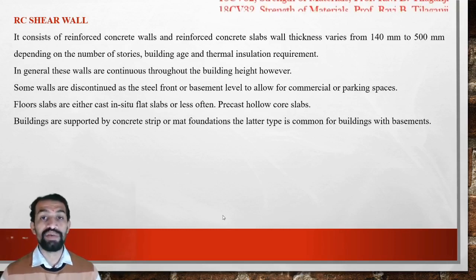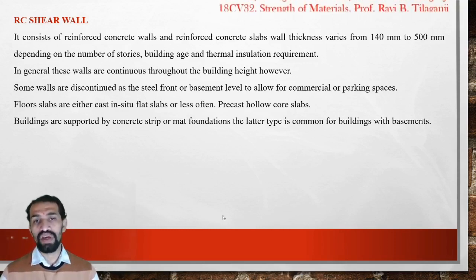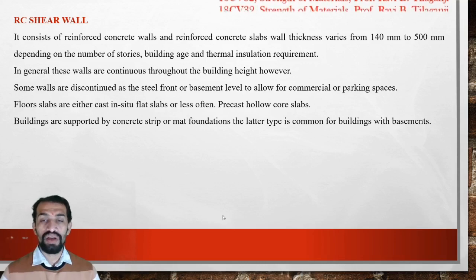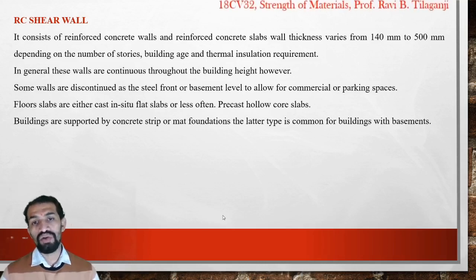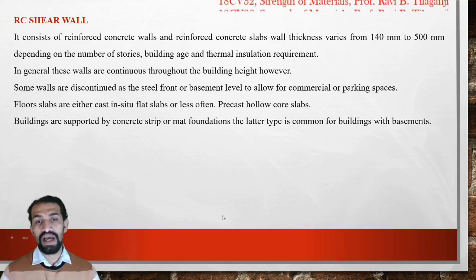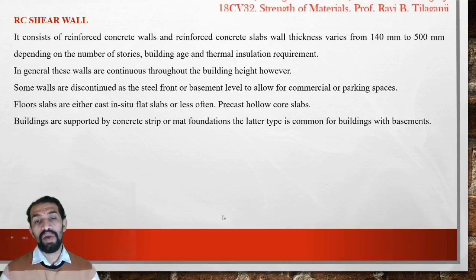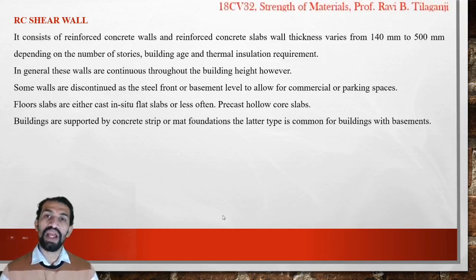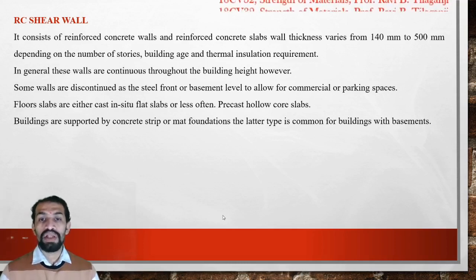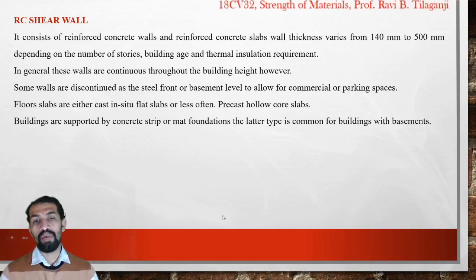In general, these walls are continuous throughout the building height. Chimneys are also constructed using RCC structures. Some walls are continued as steel at the front or basement level to allow for commercial or parking spaces. Floor slabs are either cast-in-situ flat slabs or precast hollow core slabs, and buildings are supported by concrete strip or mat foundations. Mat foundations are common for buildings with a basement.